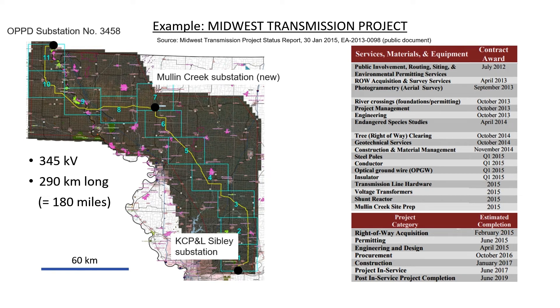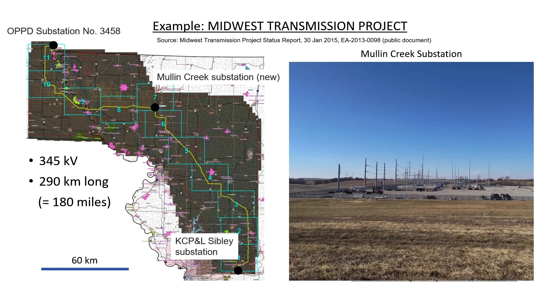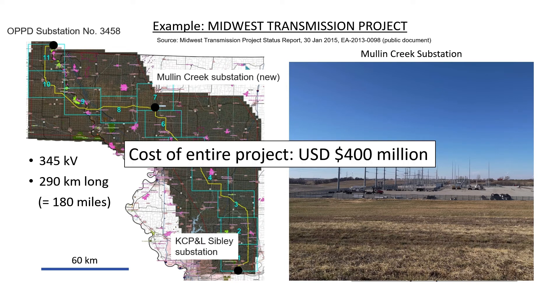Before I give you the answer, let's take a look at what the new substation looks like. This is what it looks like when it's almost finished — you can't really see much in the picture other than the lightning protection. Even though this particular transmission line is only 290 kilometers long, the cost is about 400 million US dollars. I hope you can start to understand why it doesn't always make sense to put in transmission lines rather than building new power plants, because 400 million dollars is approaching the amount of money needed to build a new power plant. That's why when we look at the map we see lots of power plants interspersed with lots of transmission lines.